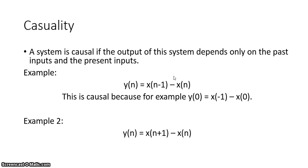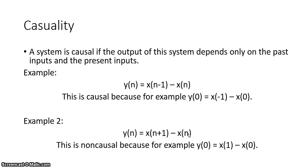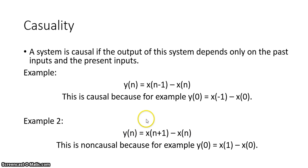If instead we have y(n) equal to x(n+1) minus x(n), this system is non-causal. The reason is that the present output depends on something that hasn't occurred yet in the signal — it's a future value — as well as the current input value. So a system with this equation is non-causal.